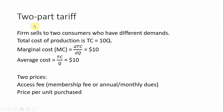Here's the setup. A firm sells to two consumers who have different demands. The firm has a total cost structure given by total cost equals 10 times Q. Notice we're ignoring fixed costs — this will just keep the math a little bit simpler. Marginal cost is a derivative of total cost, and marginal cost is constant at $10. Average cost also happens to be $10; total cost divided by Q is also 10.